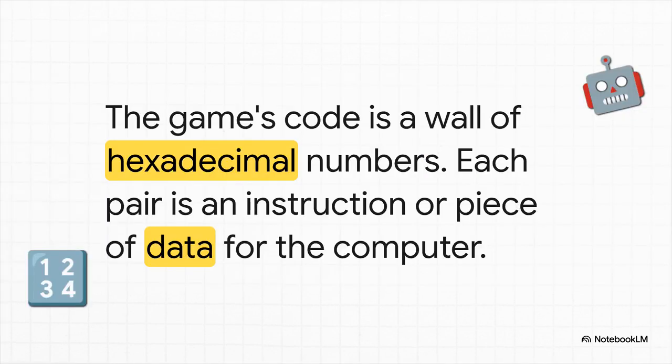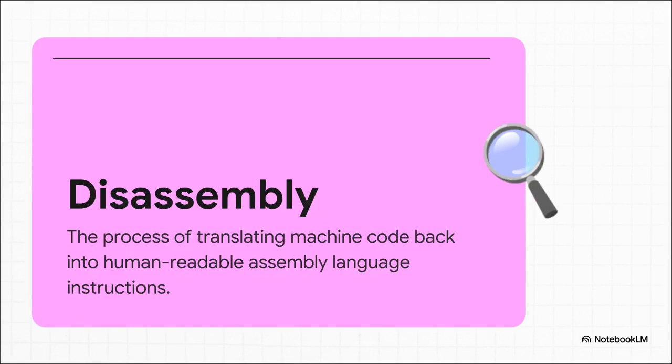This is what the game's code actually looks like to the computer — just a wall of hexadecimal numbers. To us, it looks like complete gibberish, but every single pair of characters is a specific instruction or piece of data that tells the Commodore 64 exactly what to do. To make any sense of that wall of numbers, we need a process called disassembly. You can think of it like translating an ancient language — taking the computer's native tongue, all those ones and zeros of machine code, and turning it back into something called assembly language, which is the absolute closest a human can get to reading the computer's mind.